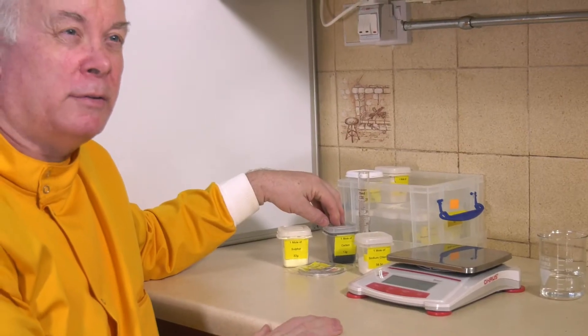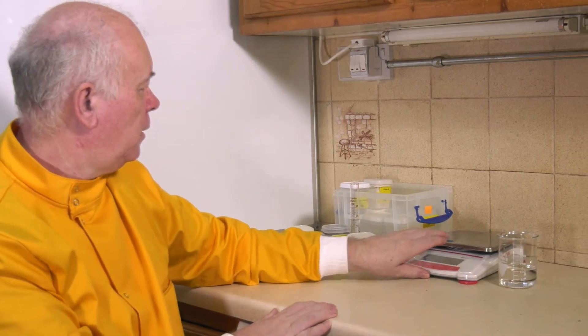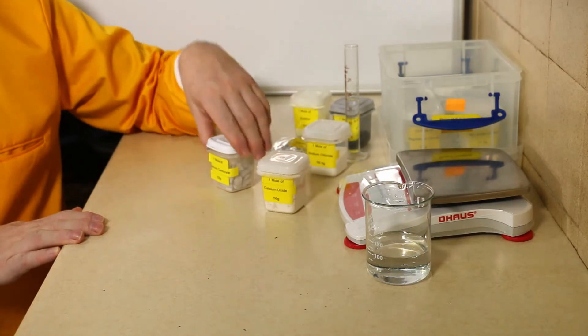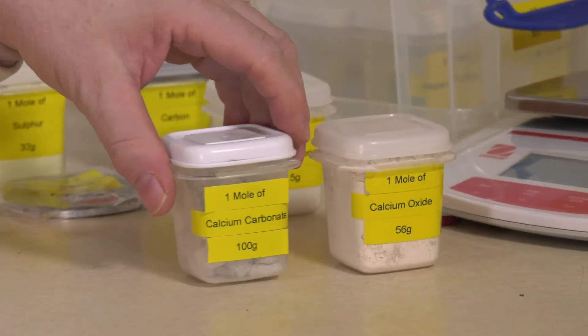The same number of atoms as the carbon, the sulfur, and the magnesium. We can look at other substances in exactly the same way - calcium oxide 56 grams, one mole of calcium carbonate 100 grams.